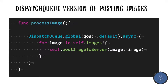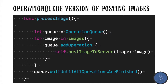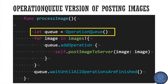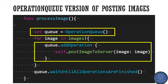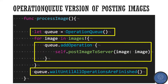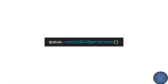Whereas in Operation Queue, something is different. Here you can see the same thing done with Operation Queue. You make a reference first, then you add operations in the queue, and then you choose to wait until all operations in the queue are completed. The advantage you get in Operation Queue is that you have a reference to your queue, and with that reference you can do things like cancel all operations.